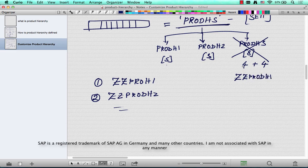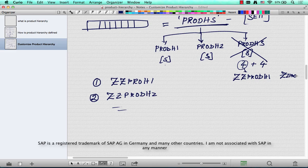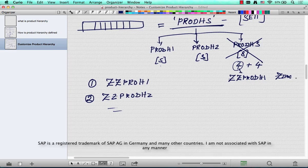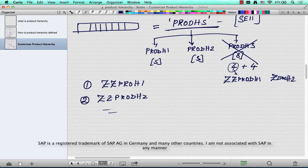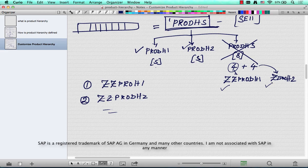And then ZZ PRODH2 for the next four characters. And when you go and define PRODHS, this is how it should look like: first, second, third, and four. That's how you can customize your product hierarchy.